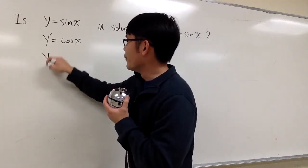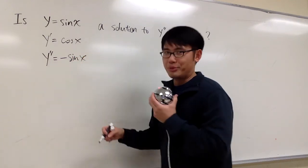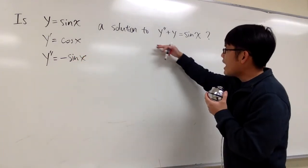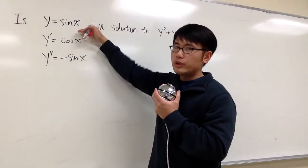And I have to do it again. y double prime is the derivative of cosine x, which is negative sin x. That was pretty easy as well. And now let's come back to here and let's plug in the second and the original.